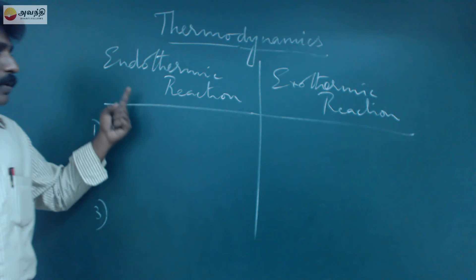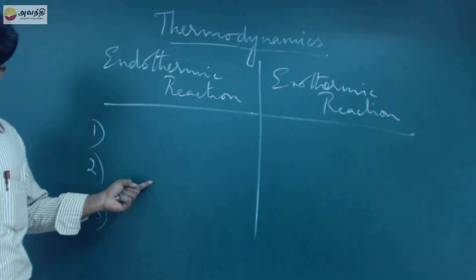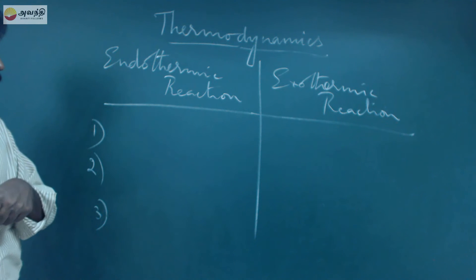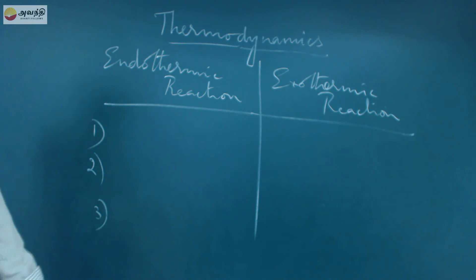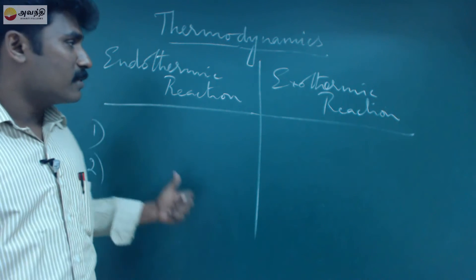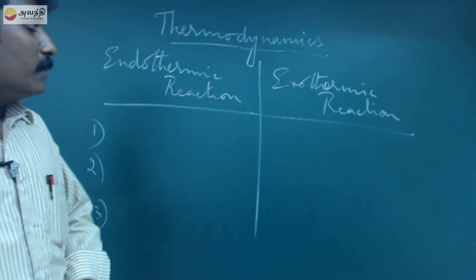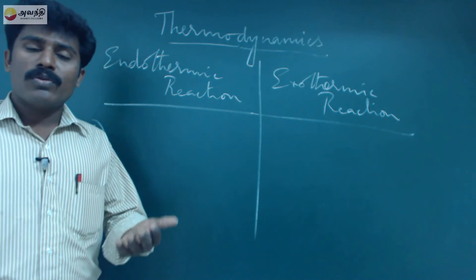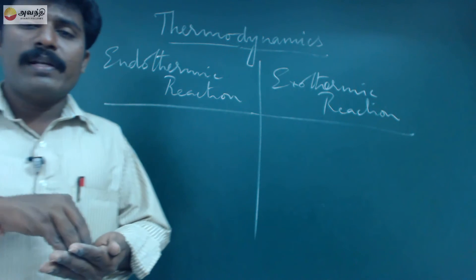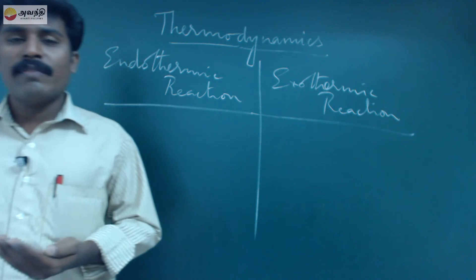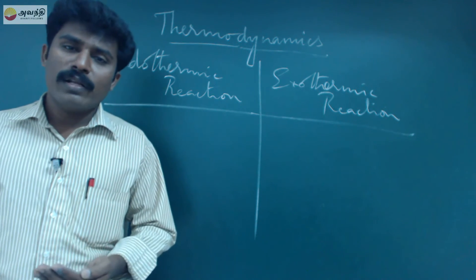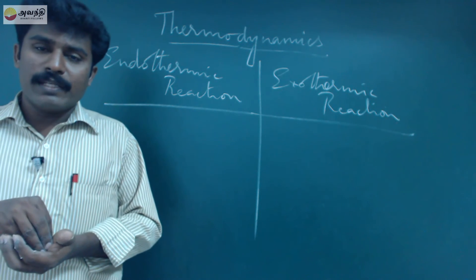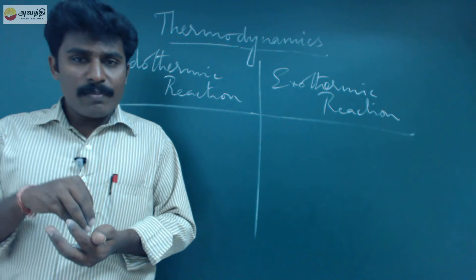So in an endothermic reaction, during the chemical reaction, heat is absorbed, so it feels cool. The best example of an endothermic reaction is dissolving glucose or ammonium chloride in water. How do you feel it? It will feel cold, because it is an endothermic reaction — heat is absorbed from the surroundings.